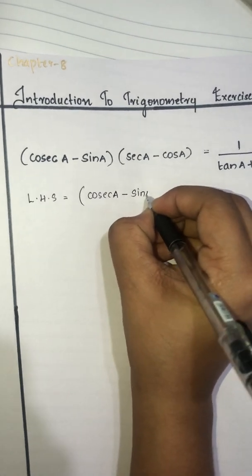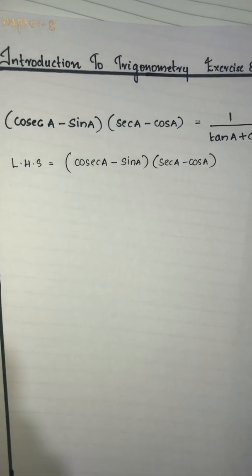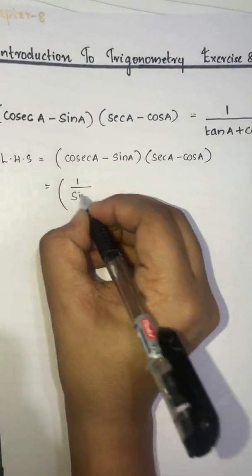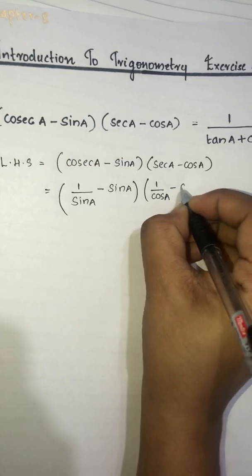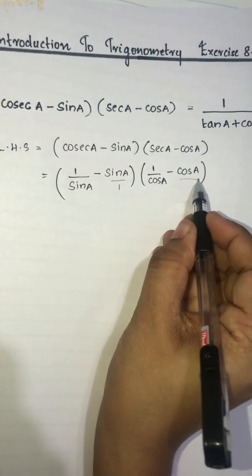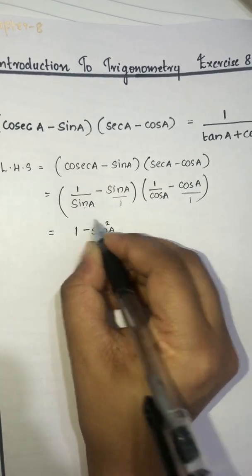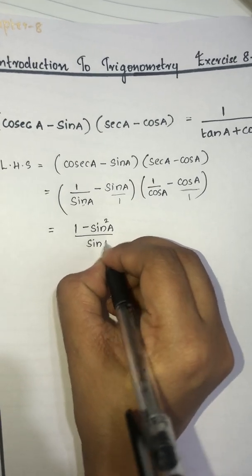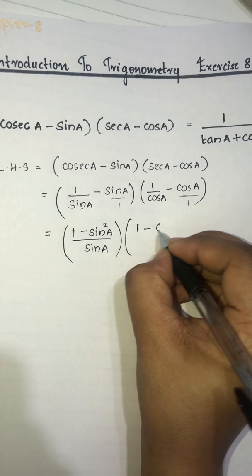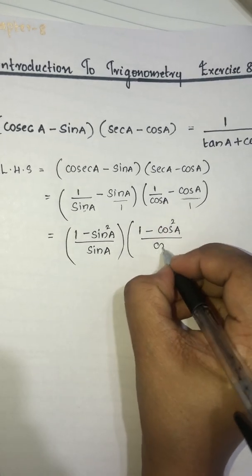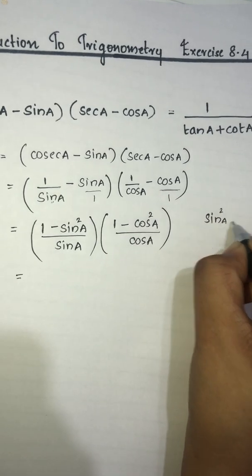Here, (1/sinA − sinA) equals (1 − sin²A)/sinA, and (1/cosA − cosA) equals (1 − cos²A)/cosA. Cross multiplying: sinA into sinA gives sin²A, so we get (1 − sin²A)/sinA.